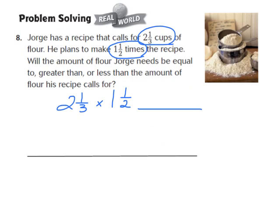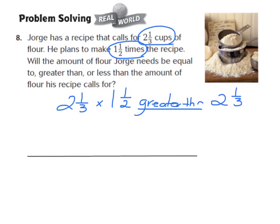We have to decide: is the product of 2 and 1 third times 1 and 1 half going to be equal to, greater than, or less than the 2 and 1 third cups the recipe calls for? I'm multiplying the mixed number 2 and 1 third by 1 and 1 half, which is greater than 1. When I multiply by a number greater than 1, the product has to be greater than the factor 2 and 1 third. So we write down greater than — George will need more than 2 and 1 third cups of flour.